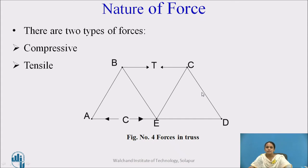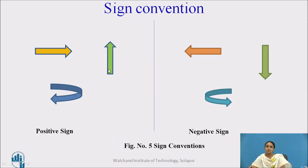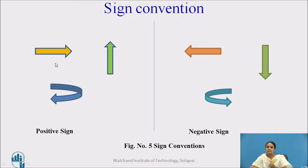When analyzing a frame, we consider the various forces acting on it. The nature of force is of two types: compression and tensile. Compression means the force is acting towards the joint. Forces have direction — horizontal, vertical, or moment (clockwise or anticlockwise). Forces acting upward and towards the right, and clockwise moment, are considered positive. Forces acting downward, towards the left, and anticlockwise moment are considered negative.